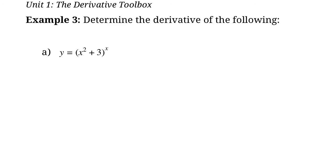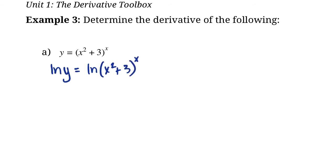Turns out we don't need another rule — we can use what we know about logs. Logs have the useful property that you can bring down an exponent. So we take the ln of both sides: ln y equals ln of (x squared plus 3) to the power of x. Using the power rule for logs, we bring that x down in front: ln y equals x times ln(x squared plus 3).